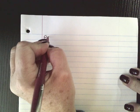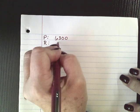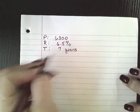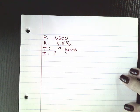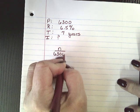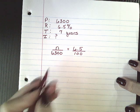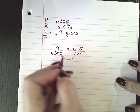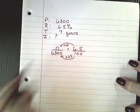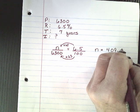Alright, let's try another one. The principal is going to be $6,300, the rate is going to be 6.5%, and the time is going to be 7 years. We are looking for the amount of interest. We know our principal is $6,300 and our rate is 6.5%. I know that I can go from $100 to $6,300 by multiplying by 63, and I know I can multiply my 6.5 by 63. So my interest for one year is going to be $409.50.